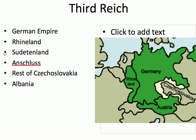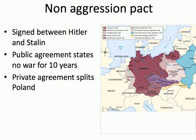This creates the Third Reich, the German Empire. They take the Rhineland, which was supposed to be demilitarized, then the Sudetenland, then Anschluss — combination with Austria — then the rest of Czechoslovakia, and then Albania. Everybody knew the Fascists hate the Communists, but Hitler surprises the entire world when he signs the non-aggression pact with Stalin — a public agreement of no war for 10 years. But privately, they split Poland: Germany takes Western Poland and the Soviet Union takes Eastern Poland. Even though they hate each other, they hate France and Britain more. It is the invasion of Poland in September of 1939 that starts World War II.